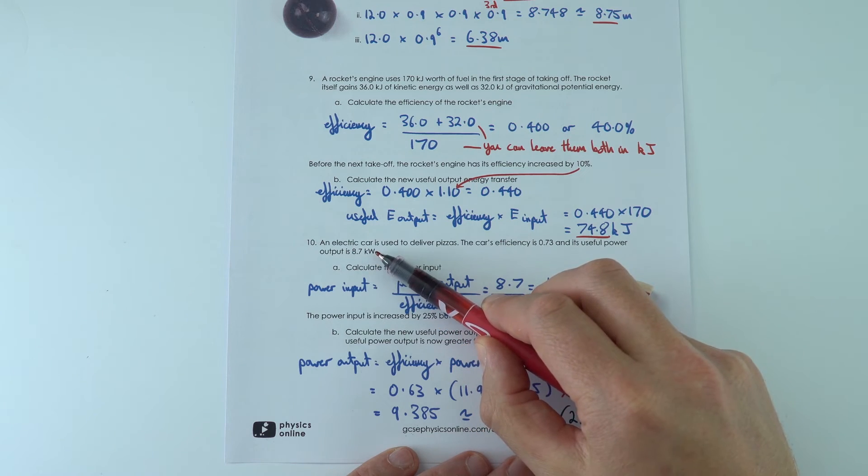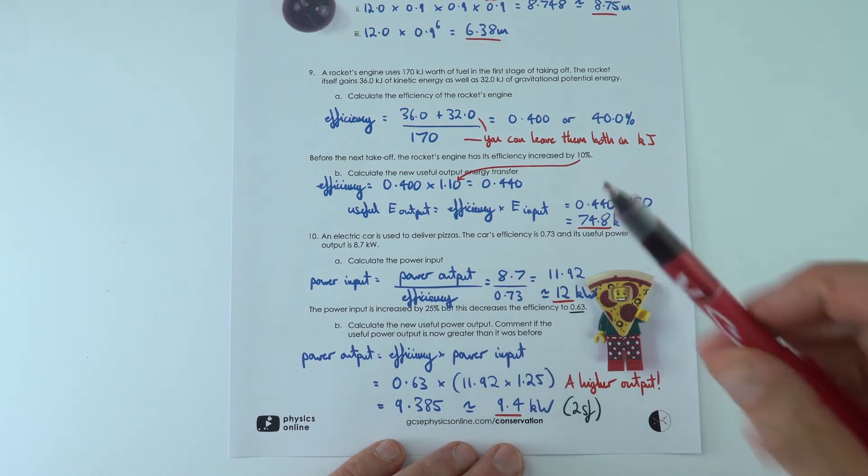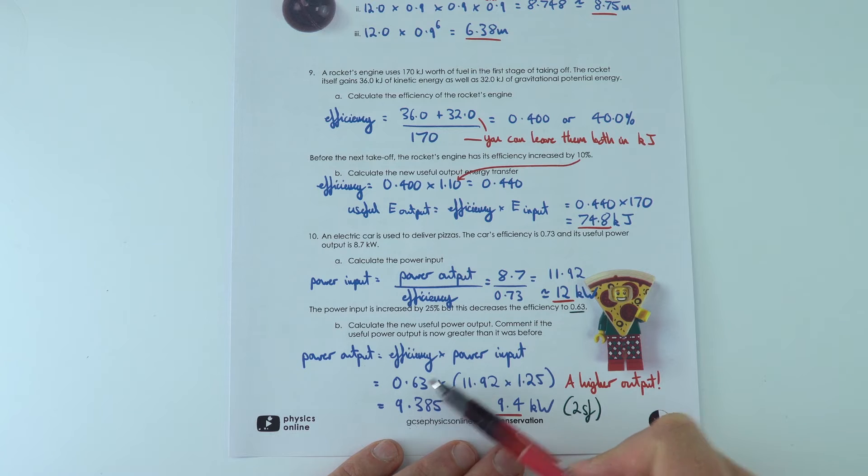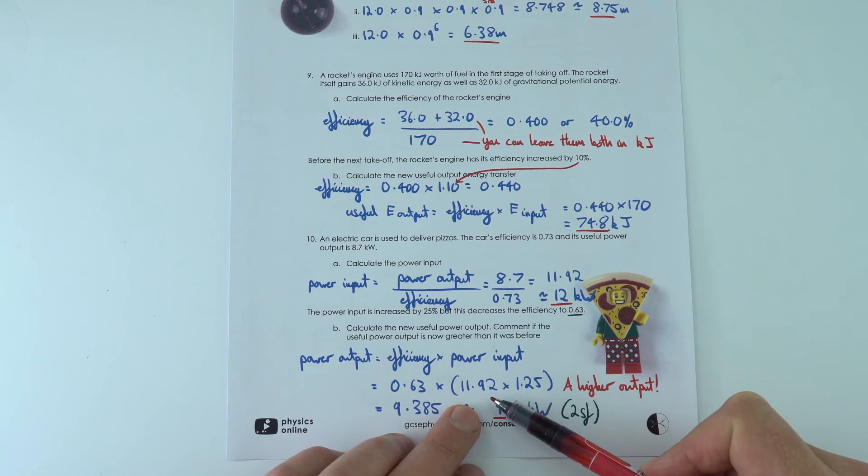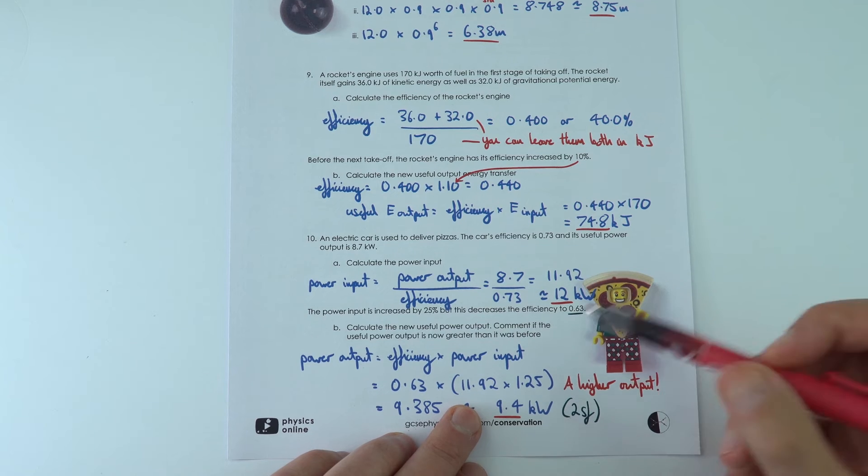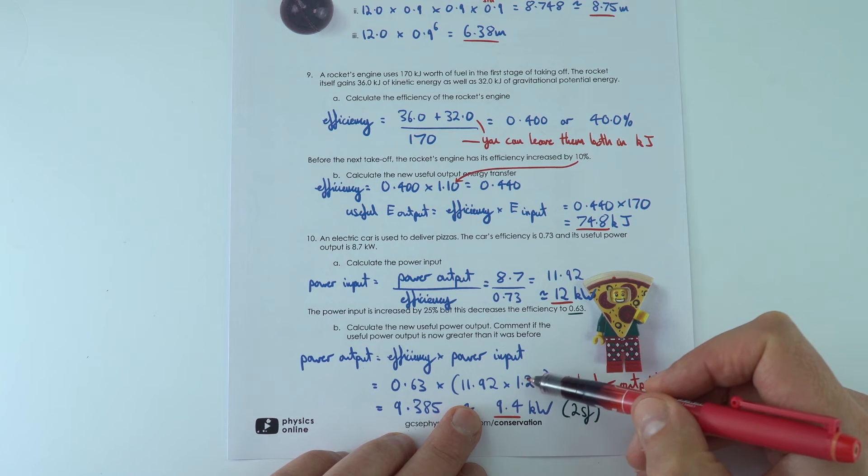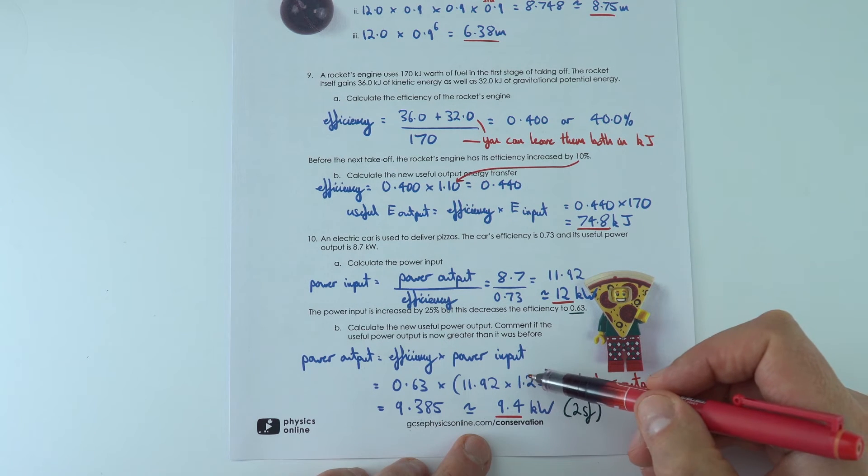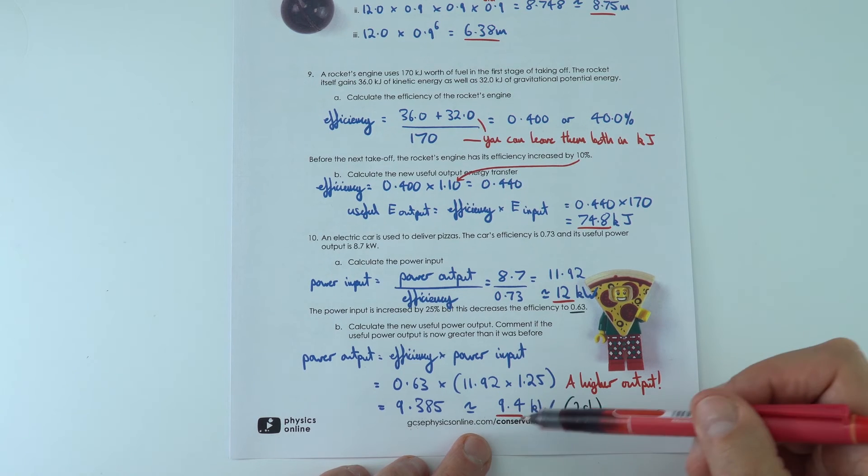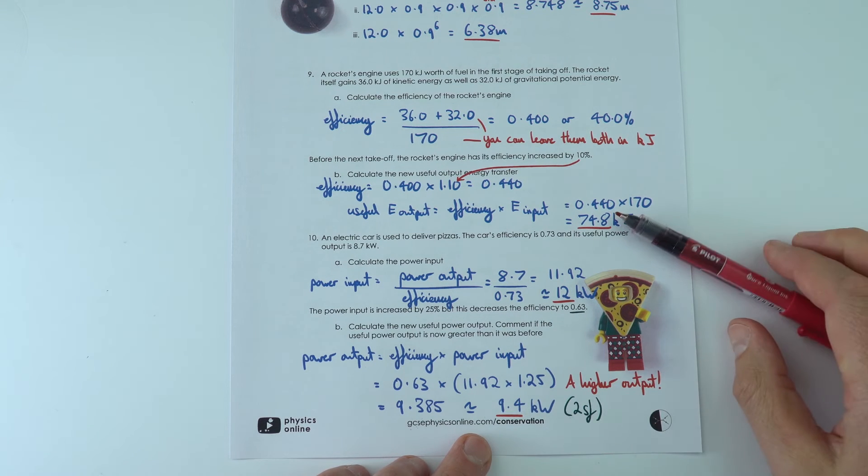So this means that effectively the power input was 12 kilowatts and we got 8.7 kilowatts out. But then the next one, we're now going to use the efficiency of 0.63. The power input is 25% more efficient, that's why I multiplied by 1.25, so it's 25% greater. And this then gave a value of 9.4 kilowatts.